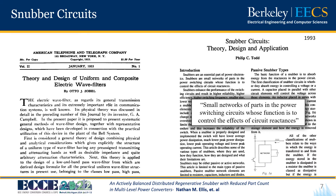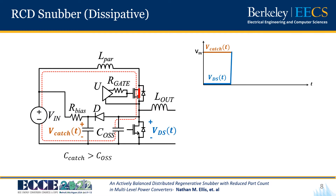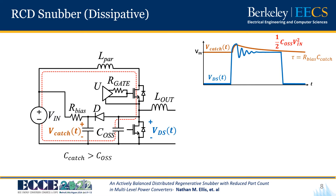Let's take a quick look at a common RCD snubber applied to our half-bridge commutation loop. Here we introduce a diode, a biasing resistor, and a clamping or catching capacitor that is sized to be larger than C_OSS and is biased to approximately V_IN through the biasing resistor. During a switching transition the voltage on C_OSS shoots upwards, but as soon as it exceeds V_catch the diode turns on and clamps C_catch in parallel with C_OSS, temporarily increasing the loop's effective capacitance and dramatically reducing the peak voltage reached. Some small residual ringing is seen on the low-side FET and the catching capacitor slowly decays back to V_IN with an overdamped RC time constant, where the decay represents a loss of one-half CV².